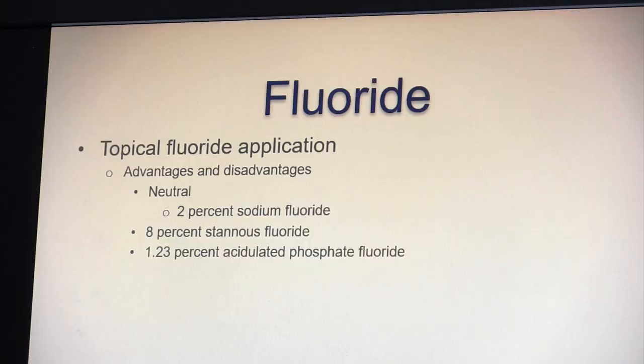Fluoride comes in different forms: gels, rinses, foams, and liquids. In the office we apply a varnish; at home we send patients a gel or toothpaste form. Some are formulated for dry mouth, some for sensitivity. The application process involves a prophylaxis — having teeth cleaned — then isolating and drying the teeth before applying fluoride in the office. At home, patients use it as a toothpaste in the evenings.